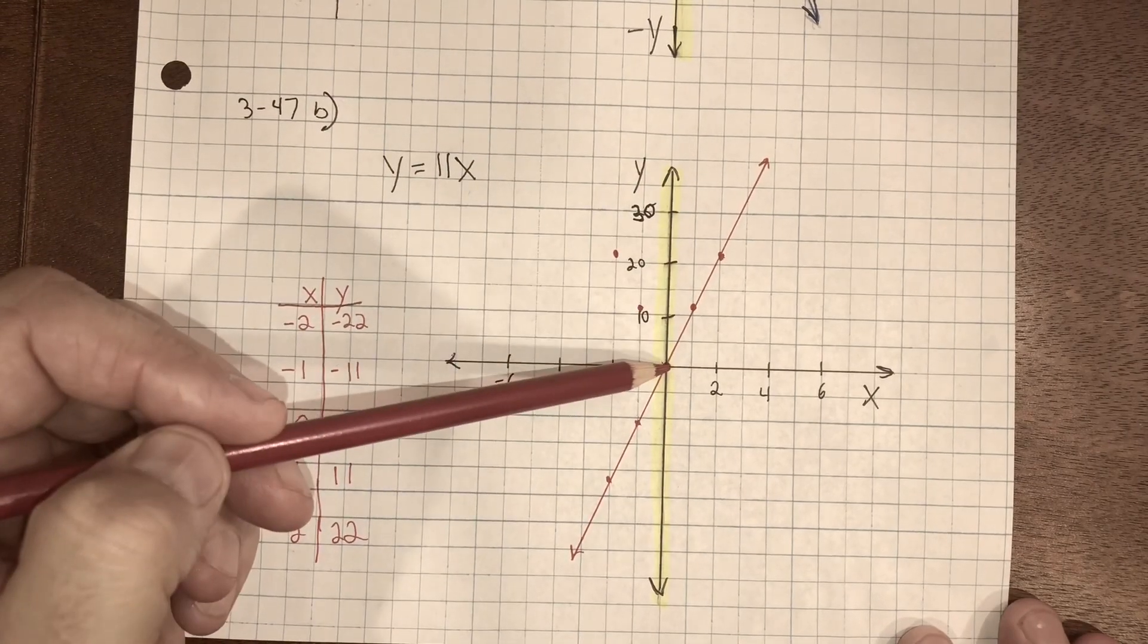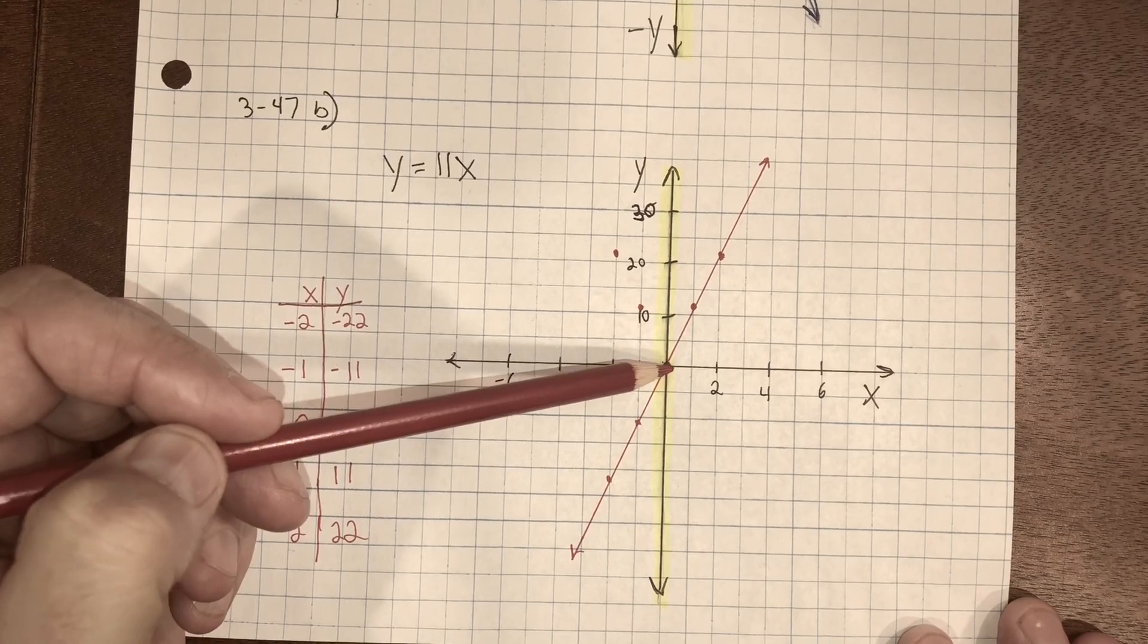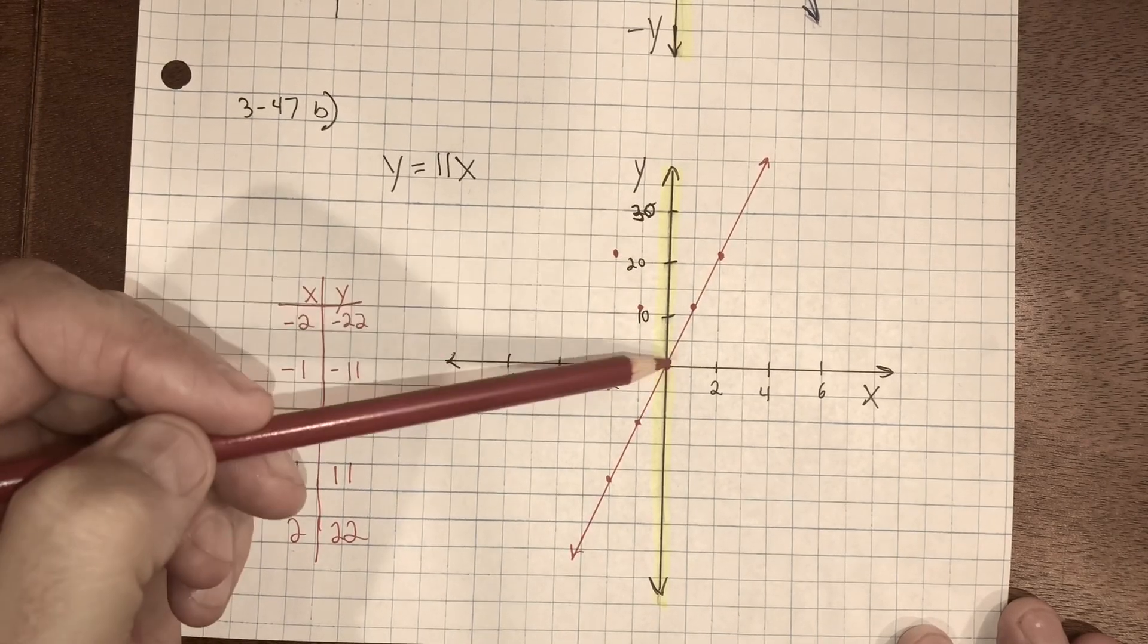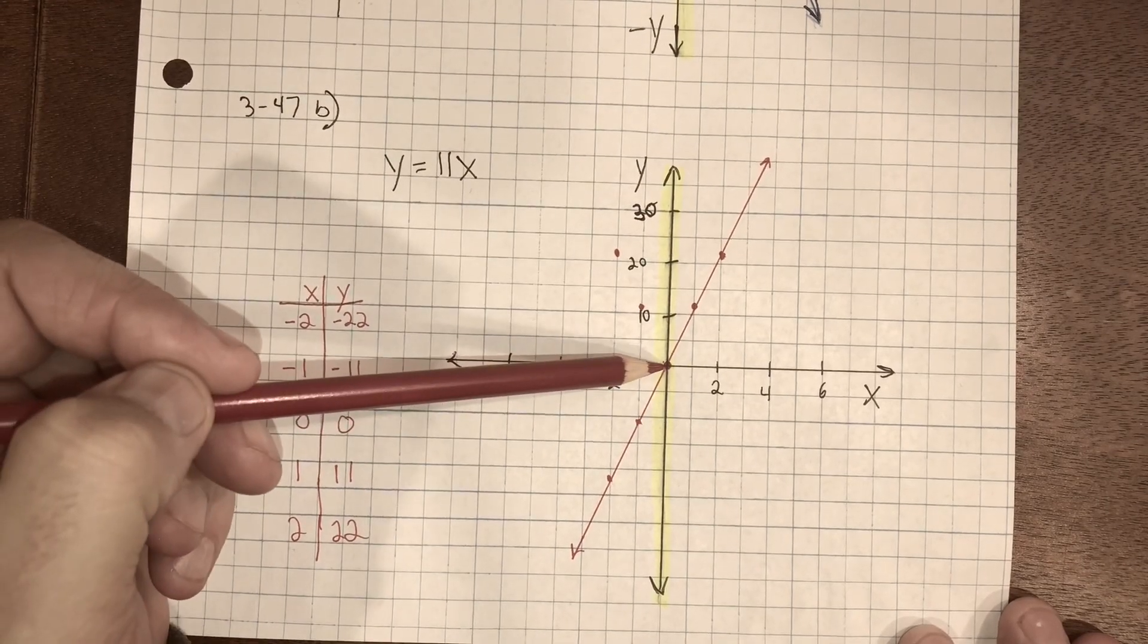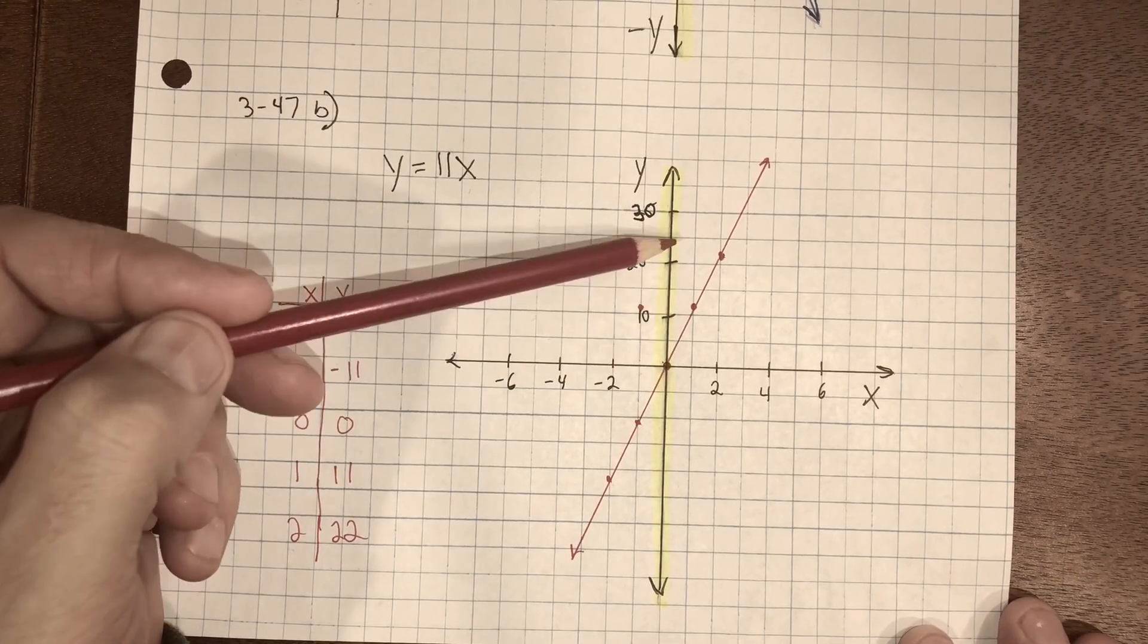If I went by ones scaling the y-axis, I would have to use the whole paper. So I decided to go by fives.